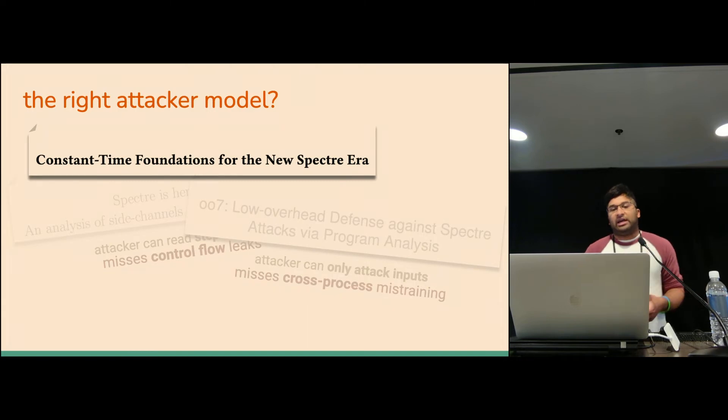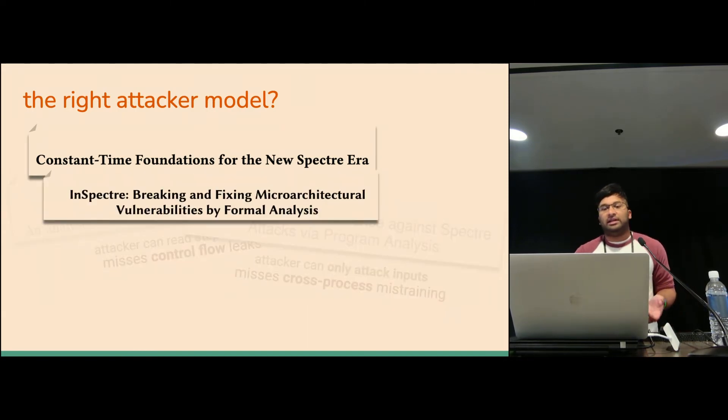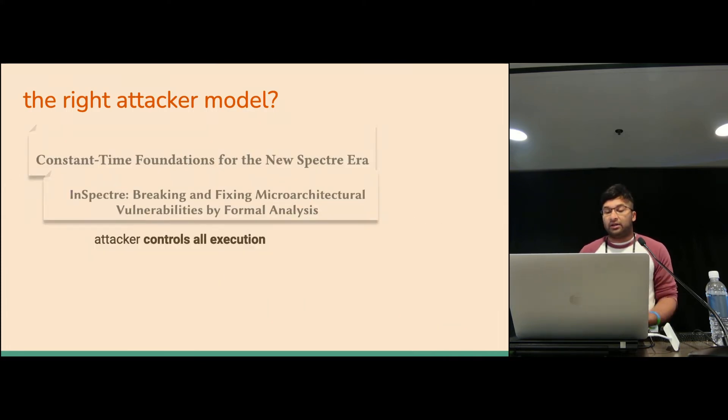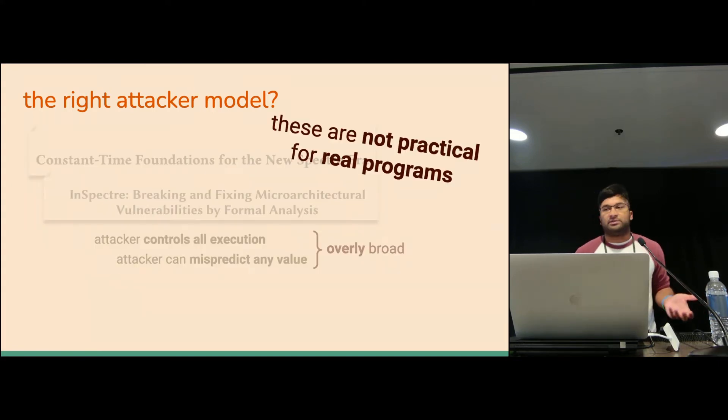But on the other end of the spectrum, we have papers like Constantine Foundations and Inspector that are very expressive. They allow the attacker the power to control the entire range of execution, all of the instruction scheduling, and allow for arbitrary misprediction of values. So they can actually represent all of these different Spectre attacks in their model. But if you try to use a model that's this broad for an actual practical tool, it doesn't work out. You would just end up with far too many false positives. We really need a sweet spot of abstraction where we can analyze programs in a sane way.